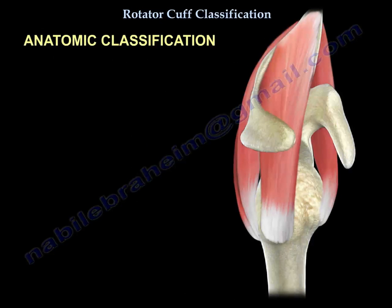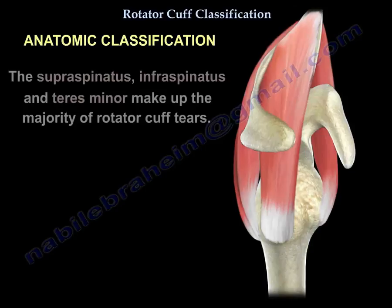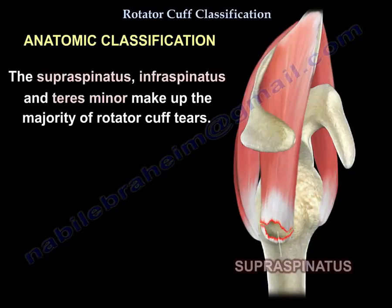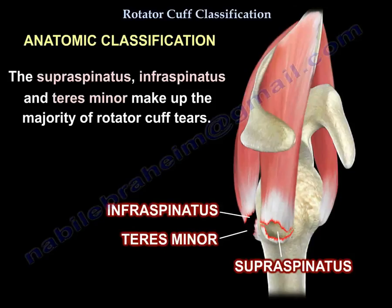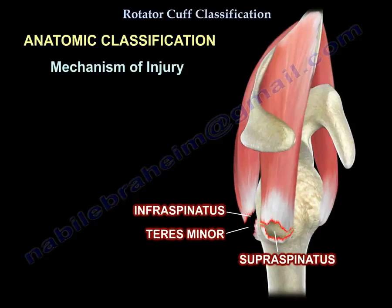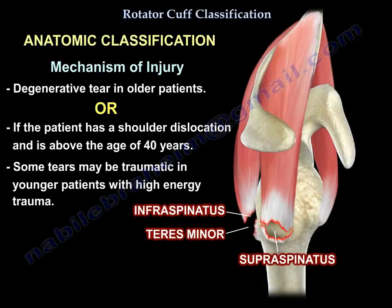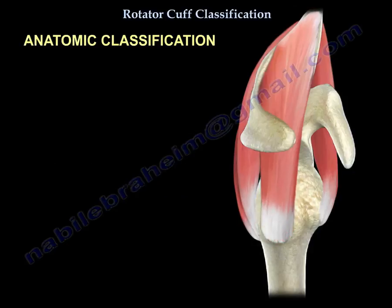The second classification is the anatomic classification. The supraspinatus, infraspinatus, and teres minor make up the majority of the tears. The mechanism is usually a degenerative tear in older patients, or in patients who have a shoulder dislocation above the age of 40. Some of these tears can be traumatic in younger patients with high energy trauma.